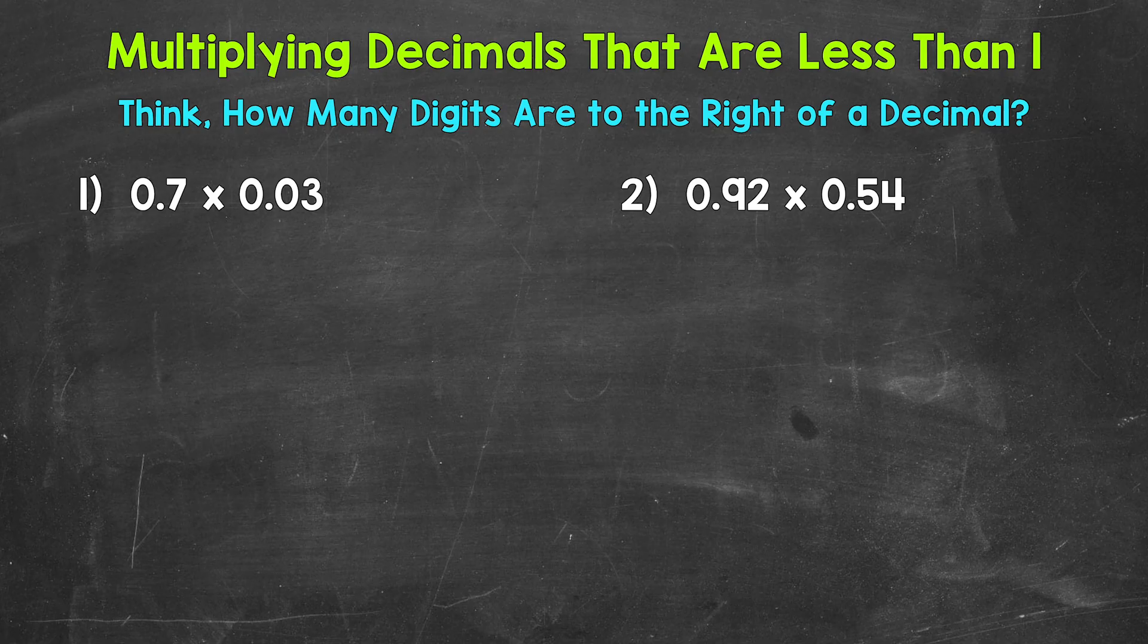Let's jump into our examples, starting with number 1, where we have 7 tenths times 3 hundredths.